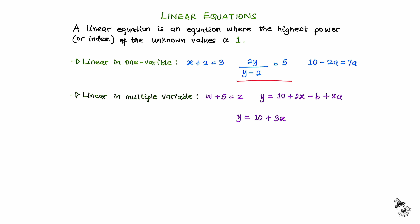In the second equation, we have y at the numerator and also y at the denominator. The power of the first y is 1, and the power of the second y is also 1. Even though the 1 is not written, we are expected to know that the index there is 1. Because the highest power of the unknown is 1, this equation is also linear. Since y appears twice but is still just one unknown, this equation is linear in one variable.